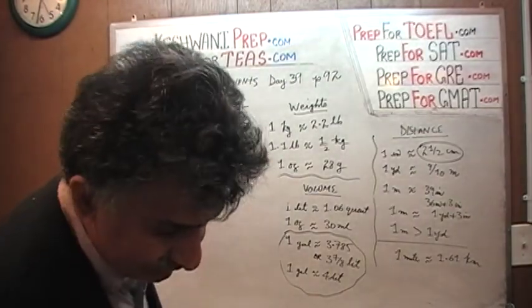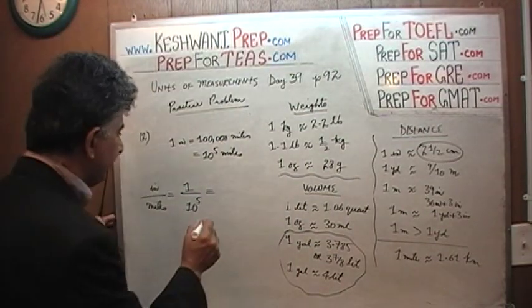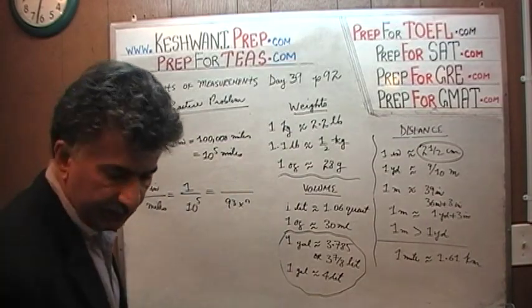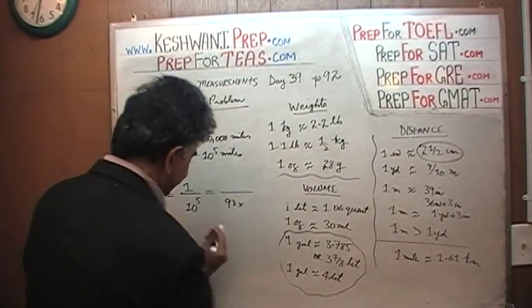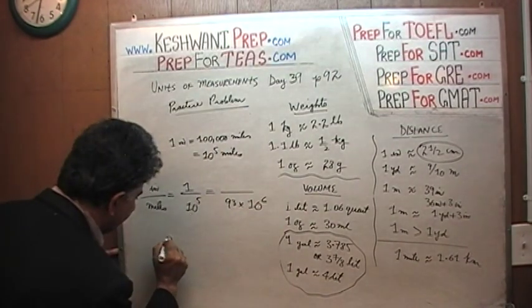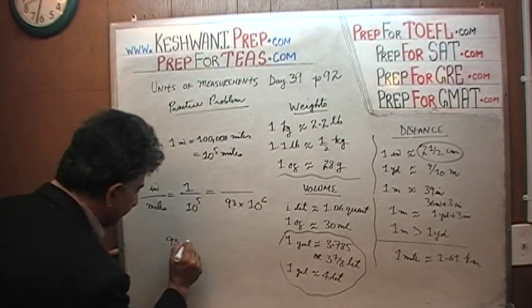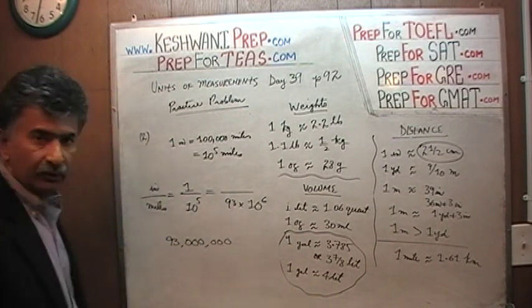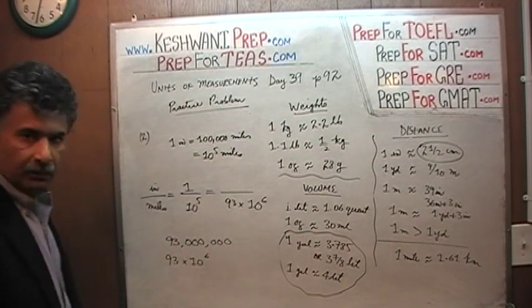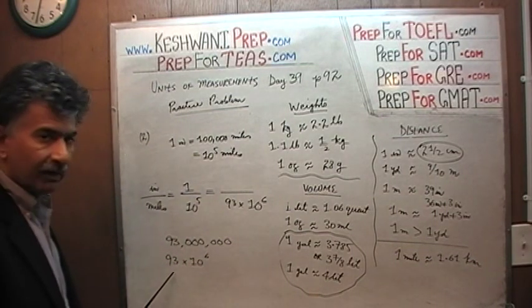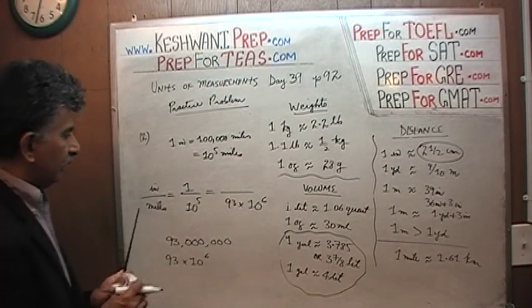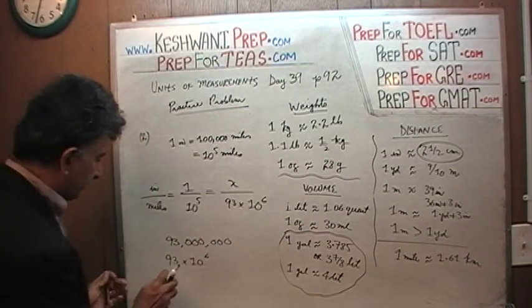And the question is, if the actual distance is 93 million miles, which can be written as 93 times 10 raised to 6. 93 million is 93 with 6 zeros which is same as 93 times 10 raised to 6. This is 1 million. 1 million times 93 is 93 million. So this is your 93 million and the question is what goes on the top.